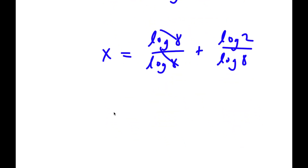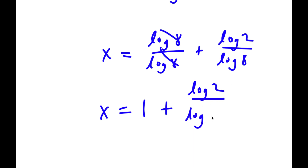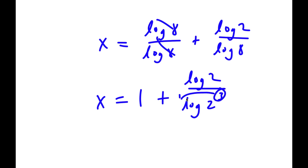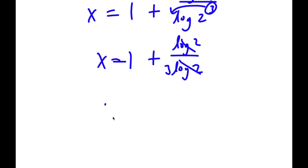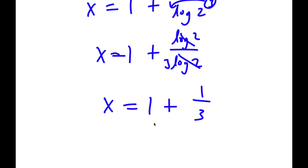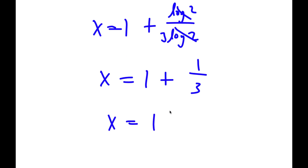And log 8 over log 8, these two cancel out. So now I have x is equal to 1 plus log 2 over log 8. Log 8 is the same thing as log 2 to the power of 3, so I can move the 3 to the front. Now I have 1 plus log 2 over 3 times log 2. These two log 2s cancel out, so x is equal to 1 plus 1 over 3, which is equal to 1 and 1 third.